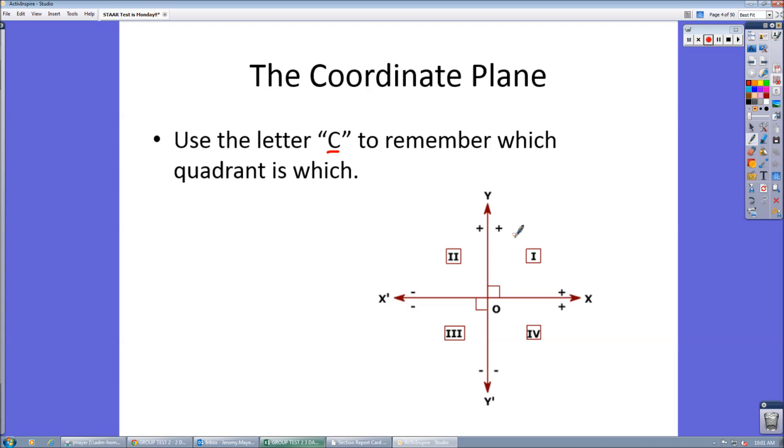The coordinate plane, the quadrants. Use the letter C, make a C, and that will tell you how to number them: 1, 2, 3, 4, and they're numbered by Roman numerals there.